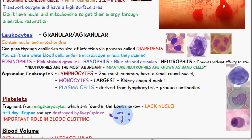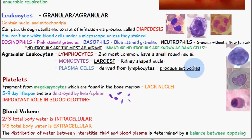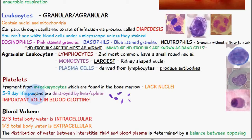Platelets are fragmented from megakaryocytes, which are found in the bone marrow. Platelets don't have nuclei and have a five to nine day lifespan, and are destroyed by either the liver or the spleen. Platelets have an important role in blood clotting, and another name for a platelet is a thrombocyte.